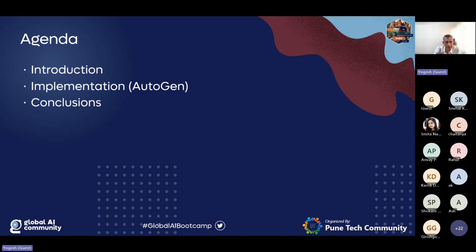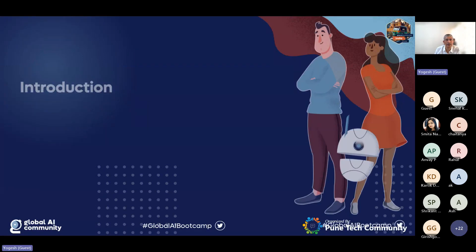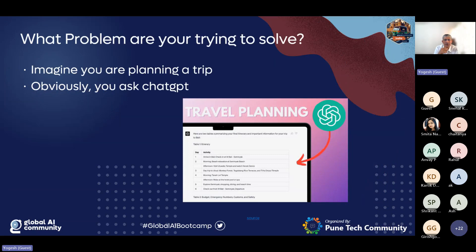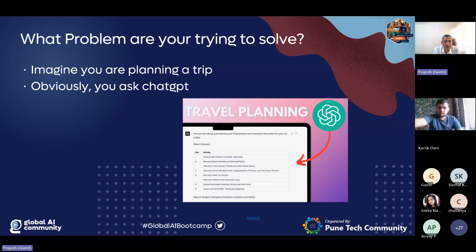I'll go on speaking and at some logical intervals I'll let you ask questions. I'm assuming everybody must have used ChatGPT, Bard, or similar tools — these are just chatbot-like front ends for large language models. Behind ChatGPT is the GPT-3.5 instruct model; behind Bard or Gemini is the Gemini model, and so on.